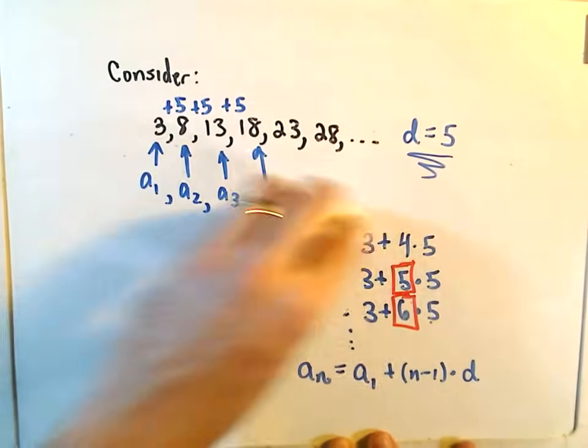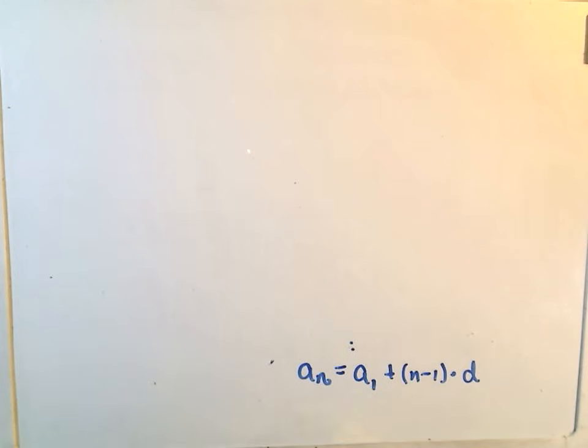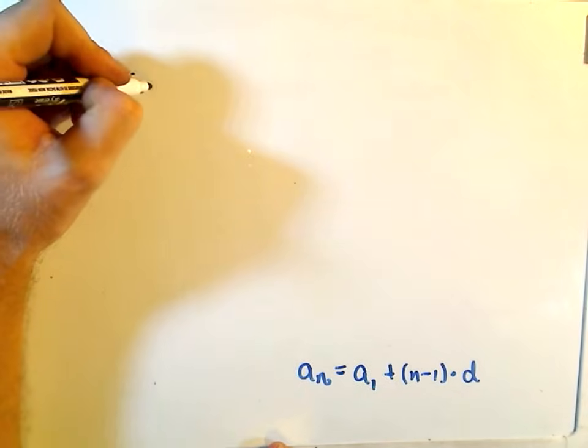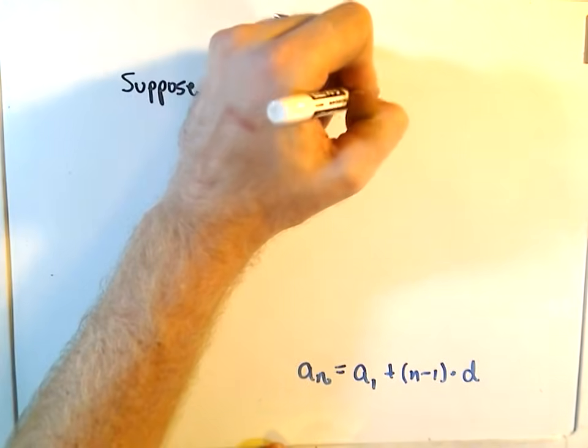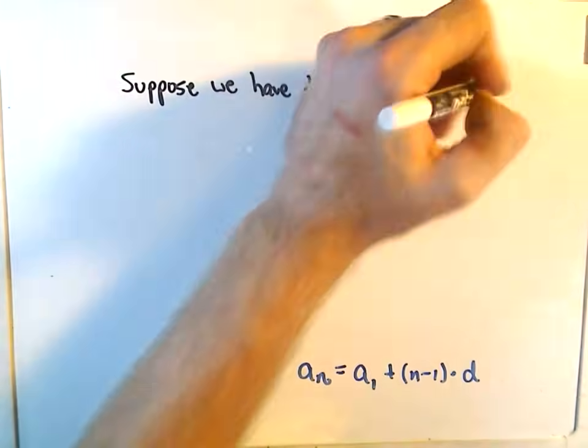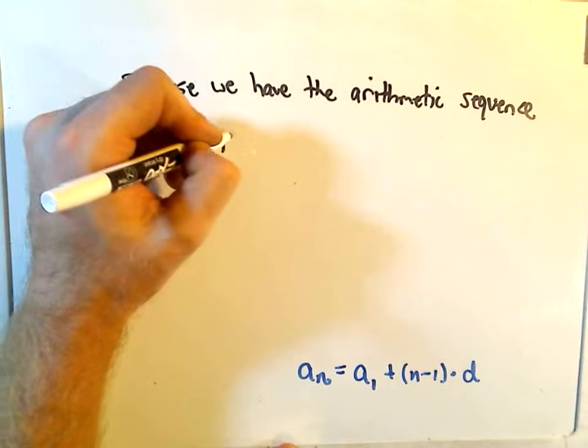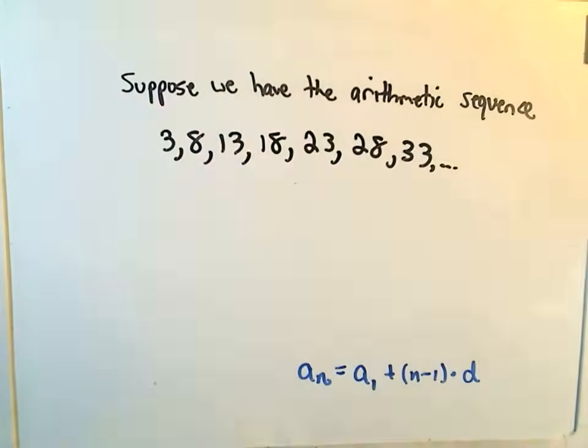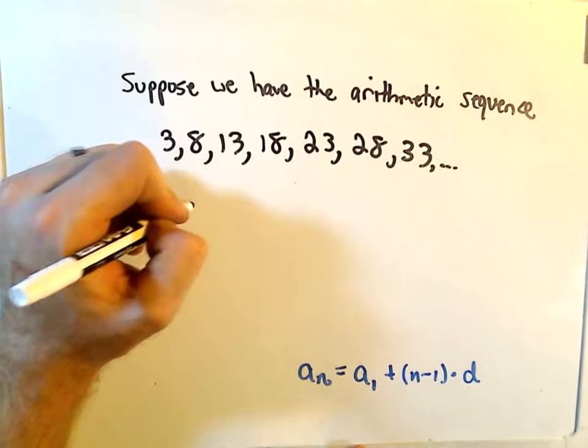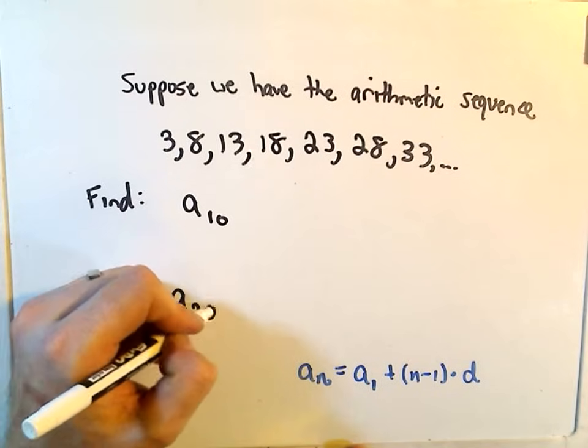All right, so let's use this to do a couple problems here real quick. So a couple easy ones are, you know, not easy, but I think about as straightforward as they'll come with this. Suppose we have the arithmetic sequence. Let's use what we just had a second ago: 3, 8, 13, 18, 23, 28, 33, etc. Suppose we wanted to do a couple things. Suppose we wanted to find the tenth term, and suppose we also wanted to find maybe the two hundred and second term.